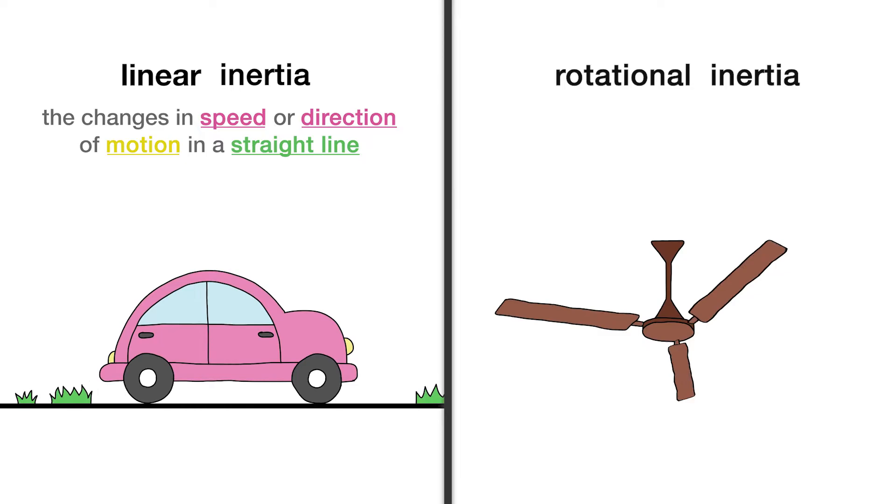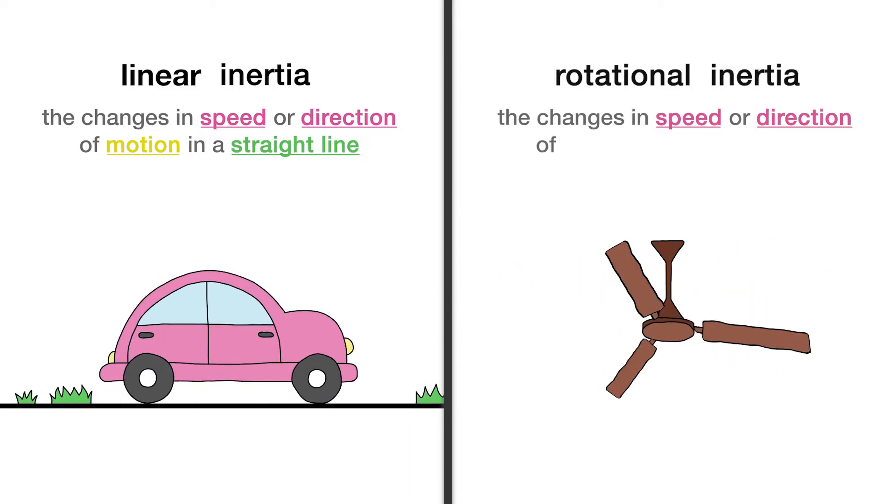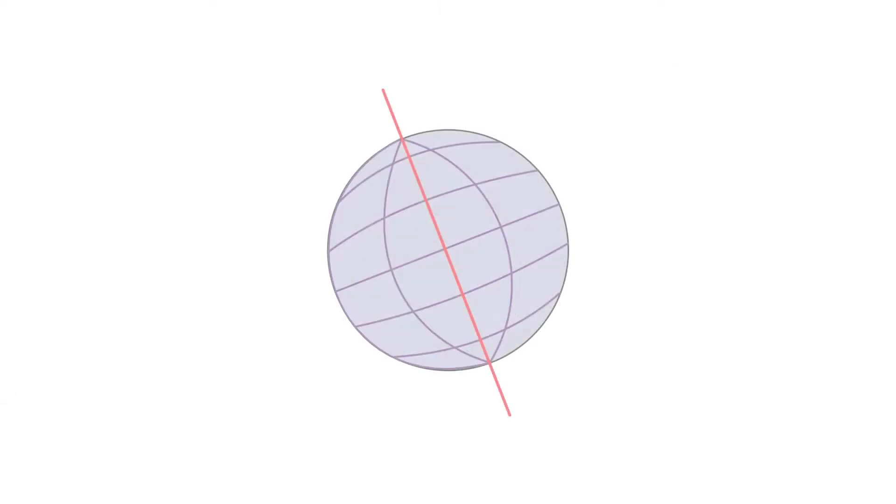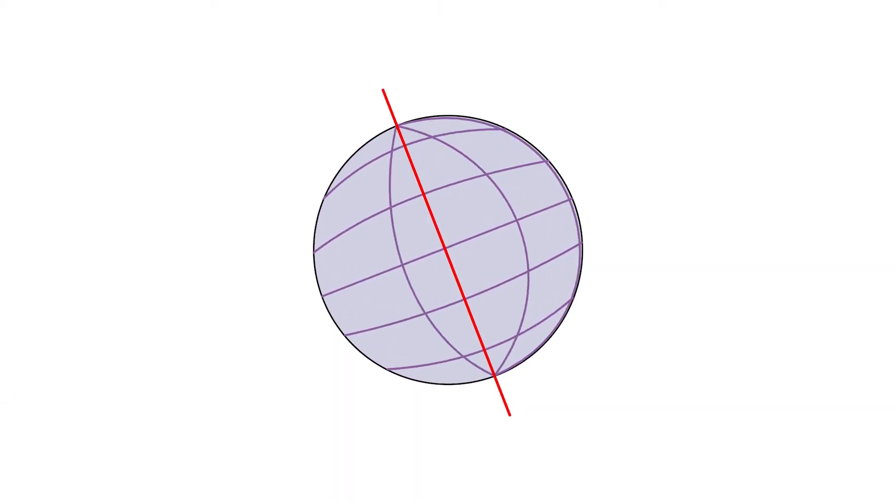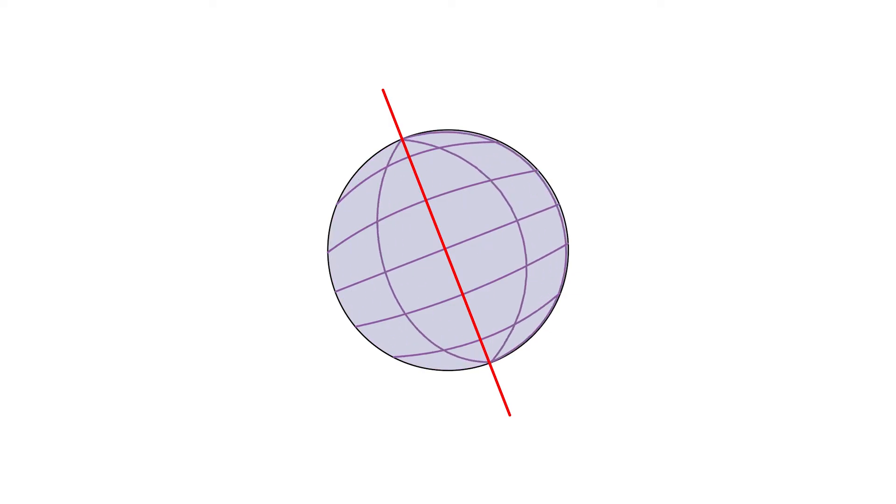Rotational inertia resists changes in rotational motion, the changes in speed or direction of rotation around an axis. The concepts are similar, but here an object's inertia is determined by not only its mass, but also its shape and distribution of that mass around the axis of rotation.